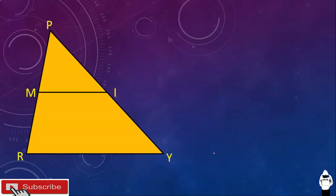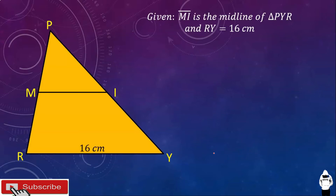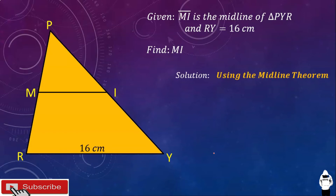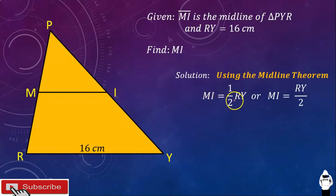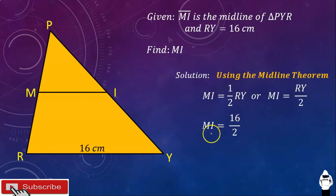Let's have this example: triangle PYR with midline MI. Segment MI is the midline of triangle PYR, and RY is equal to 16 centimeters. Find MI using the midline theorem. We know MI is one half of RY, so MI is equal to RY over 2. Substituting the value of RY, we have MI is equal to 16 over 2. Simplifying, MI is equal to 8 centimeters.